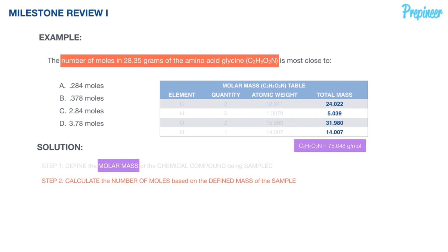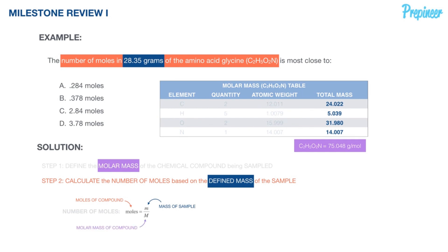Moving to step two: calculating the number of moles based on the defined mass of the sample. The problem tells us the sample is 28.35 grams. Using the formula — moles = mass of sample ÷ molar mass — we divide 28.35 grams by 75.048 grams per mole and plug that into our calculators to determine the number of moles of this amino acid in the sample.